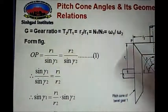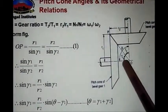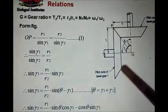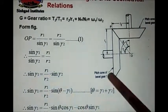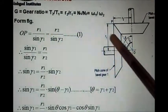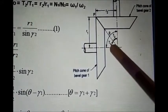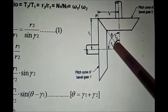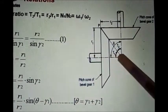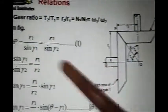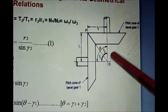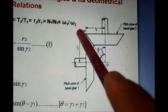From the figure, let's write the equation for OP in terms of gamma and r. Looking at the triangle, the front side is R1 and the angle is gamma 1, so we can write: OP equals R1 divided by sine of gamma 1.